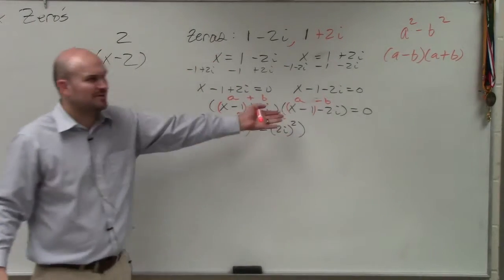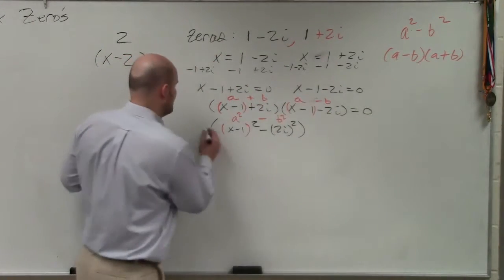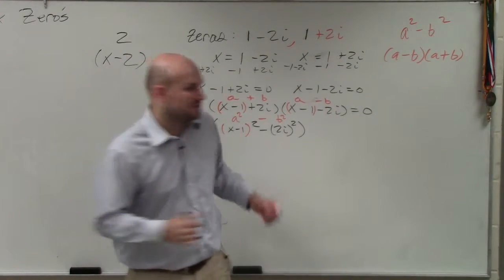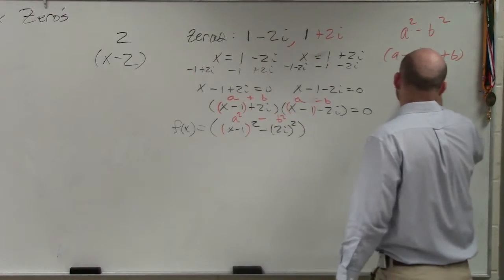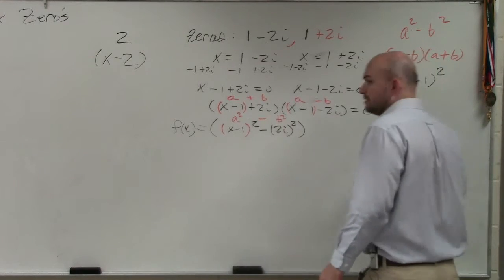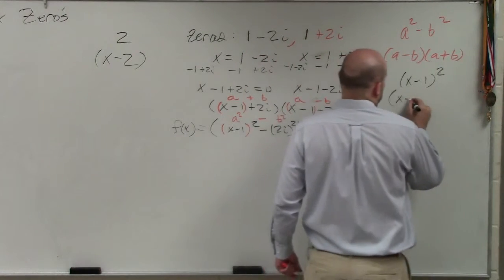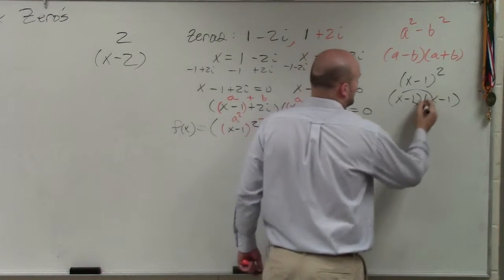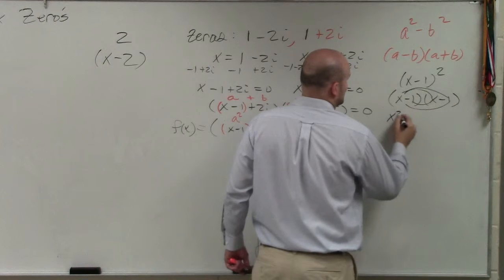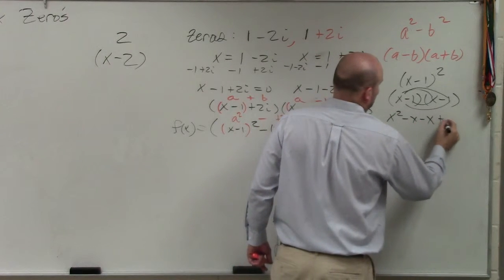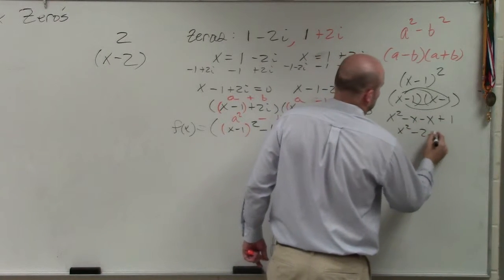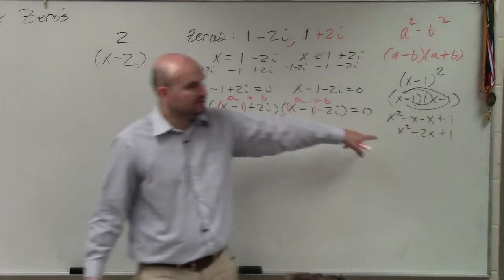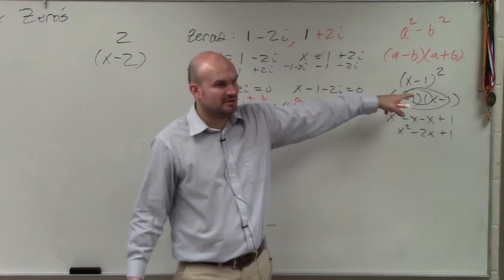So that's going to be f of x. The next mistake that a lot of students have trouble with is remembering what binomial squareds are. If you have a binomial squared, that is x minus 1 times x minus 1. So when you apply FOIL, that's x squared minus x minus x plus 1, x squared minus 2x plus 1. So I'm going to do this in my head. If you don't follow me, go back to remember FOIL.